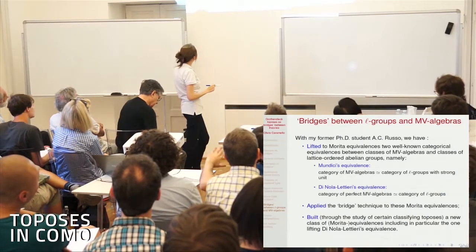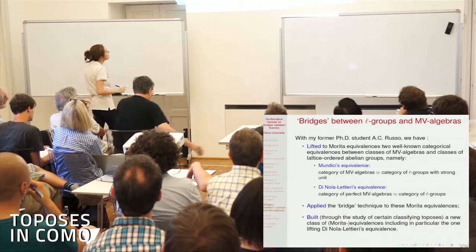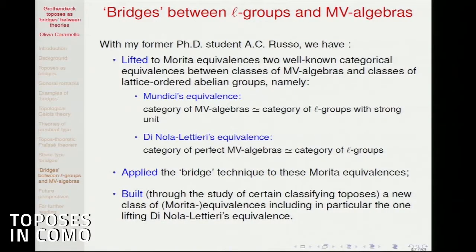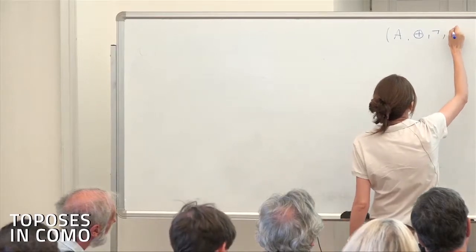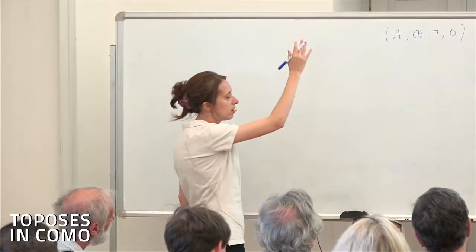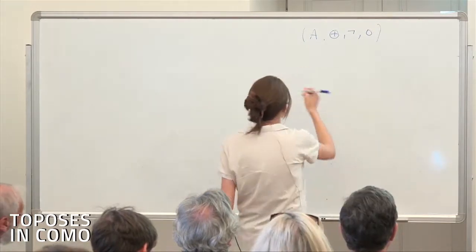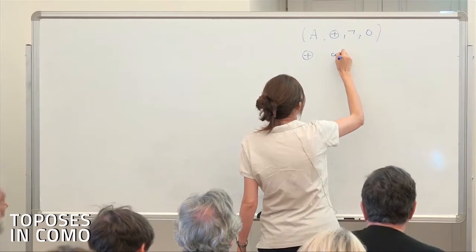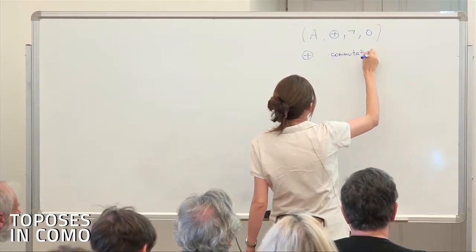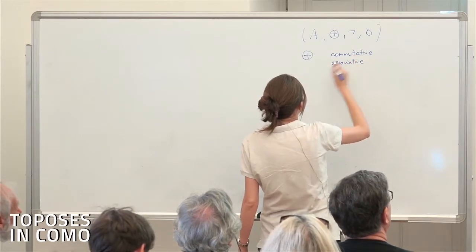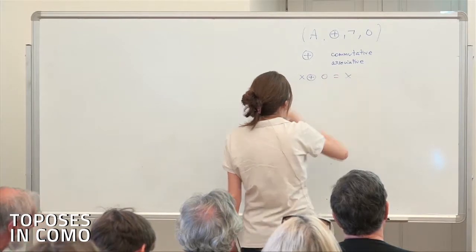The equivalence I was referring to for MV algebras is Mundici's equivalence between the category of MV algebras and the category of lattice-ordered abelian groups (L-groups) with a strong unit. An MV algebra is a set equipped with a binary operation, a unary operation, and zero satisfying a list of axioms: the binary operation is commutative and associative, plus additional properties.